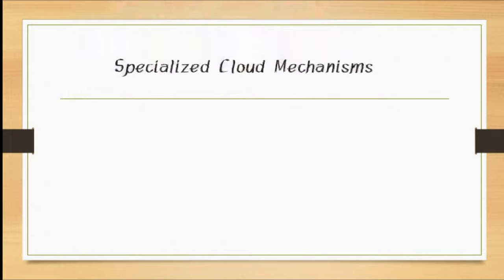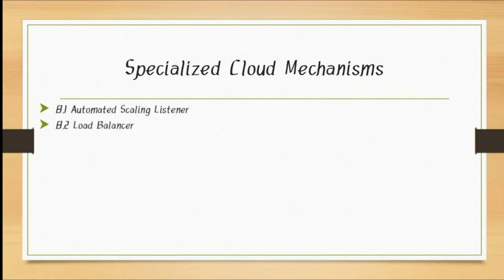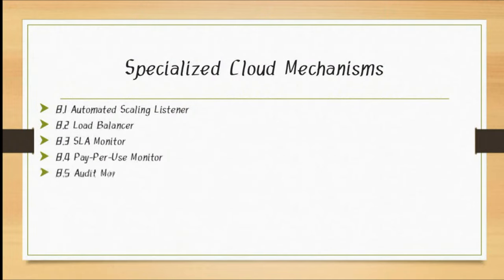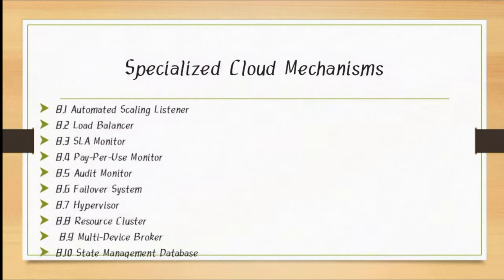In the last session we have seen the numbers of specialized cloud mechanisms. We looked at 8.1, 8.2, load balancer 8.3, SLA monitor 8.4, pay per use monitor 8.5, audit monitor 8.6, and failover system. So we have covered 6. In today's session we will see 8.7 hypervisor, 8.8 resource cluster, 8.9 multi device broker, and 8.10 state management database.